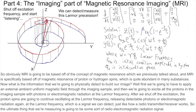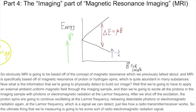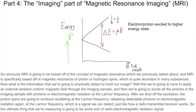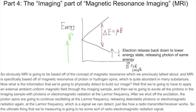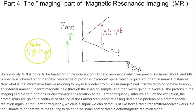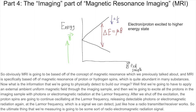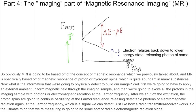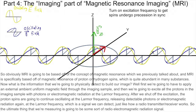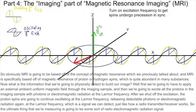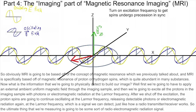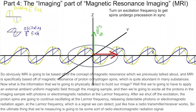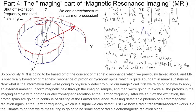What is the information that we're going to physically detect to build our image? Well, first we're going to apply an external ambient uniform magnetic field through the imaging sample, and then we're going to excite all the protons in the imaging sample with photons or electromagnetic radiation at the Larmor frequency. After we shut off the excitation, the proton spins are going to continue oscillating at the Larmor frequency, releasing detectable electromagnetic radiation again at the Larmor frequency — a signal which we can detect, just like how a radio transmitter receiver works. The ultimate thing we're measuring is some sort of radio electromagnetic radiation signal.